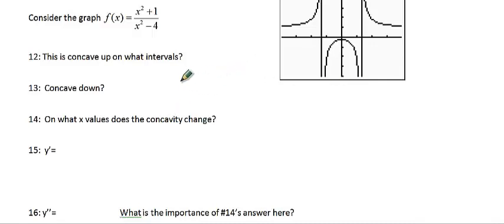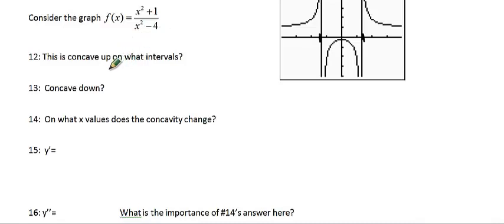Let's look at this next graph here. The first thing you want to realize is the tick marks are a little bit off here, because this should really be just based on the graph plus and minus 2. That's going to be where we have our vertical asymptotes.